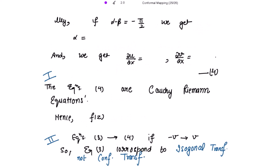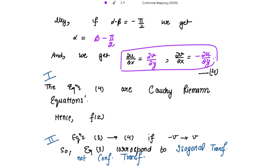Similarly, taking α − β = −π/2, so α = β − π/2, we get ∂u/∂x = ∂v/∂y and ∂v/∂x = −∂u/∂y. These are equation 4, which are the Cauchy-Riemann equations. Hence f(z) is an analytic function, since these are the well-known CR equations showing that f(z) is analytic — which is what we needed to prove.